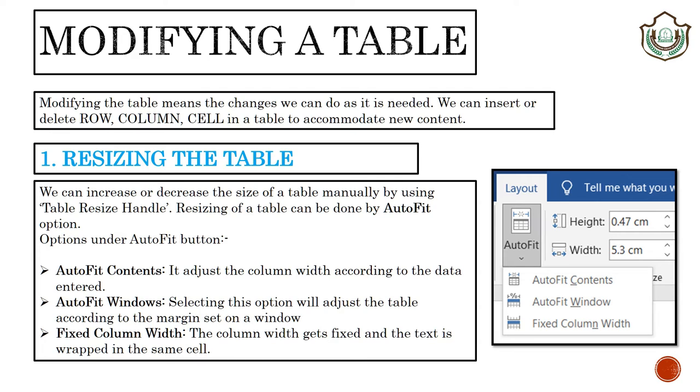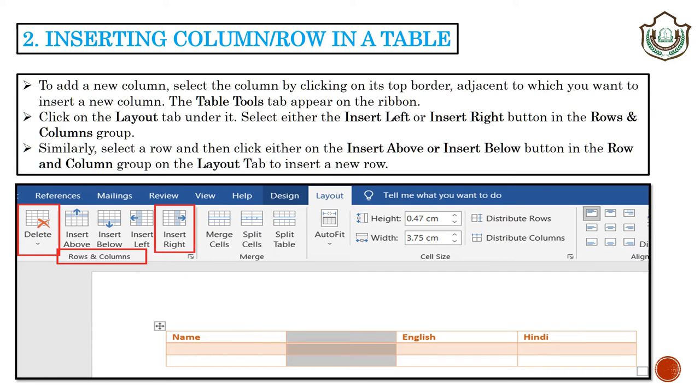You can also modify the table. Modifying the table means the changes we can do as needed. We can insert or delete rows or columns or cells in a table to accommodate new content. While creating and making entries in a table, you might need to add columns or rows in between. Word provides the facility to add new columns to right or left of any existing column, and you can also insert rows above or below.